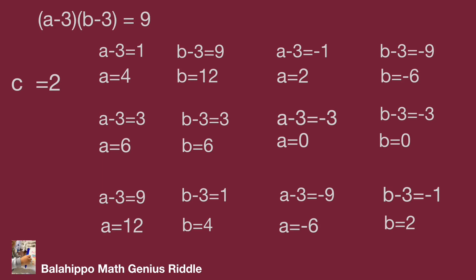Since A, B, C must be positive integers, we remove groups where B equals negative 6, A equals 0, or B equals 0. Also, since A not equal to B, we remove the A equals 6, B equals 6 group. So the valid solution is C equals 2, A equals 4, B equals 12 — giving the set {2, 4, 12}.